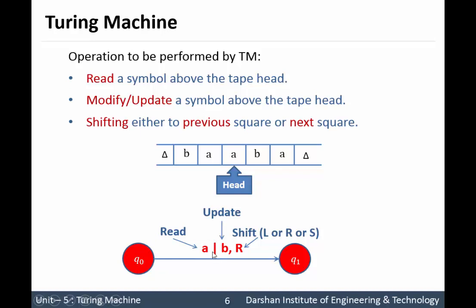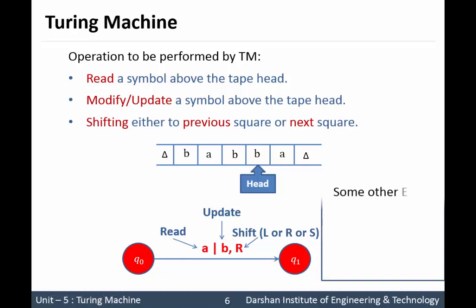The first symbol is read — that means you need to read this symbol on the tape. The second is the update operation — that means you replace A by small b. The last one is R, meaning shift one cell to the right direction. If the symbol is L, then you have to shift one cell to the left direction. If it is S, that means no need to shift anywhere.